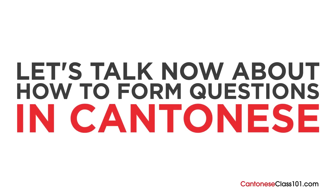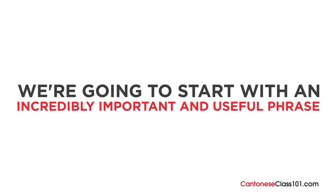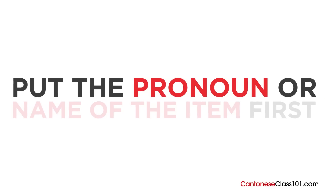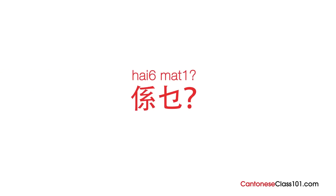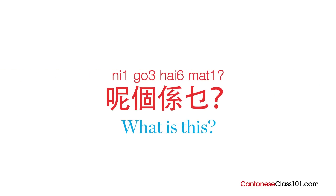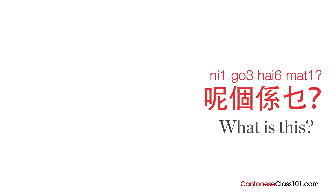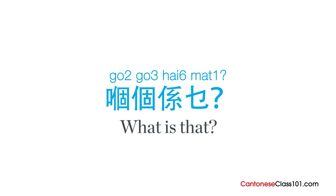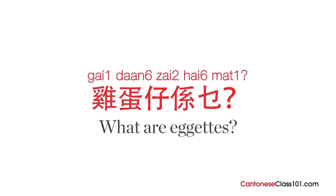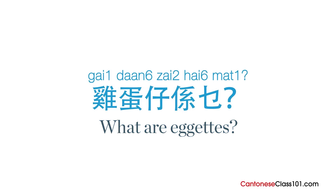Now let's talk about how to form questions in Cantonese. We'll start with an incredibly important and useful phrase. Put the pronoun or name of the item first, then add 係咩? For example, if you want to ask 'What is this?' you'd say 呢個係咩?, where 呢個 means 'this thing'. For 'What is that?' it's 嗰個係咩?, where 嗰個 means 'that thing'. If someone is talking about eggettes — 雞蛋仔 — and you don't know what that is, you ask 雞蛋仔係咩? — 雞蛋仔 is a kind of Hong Kong street snack.